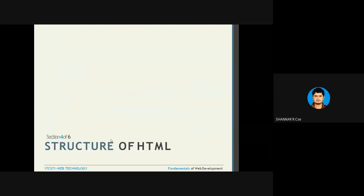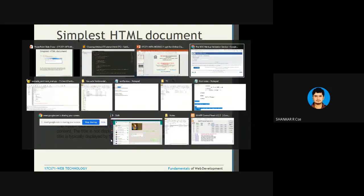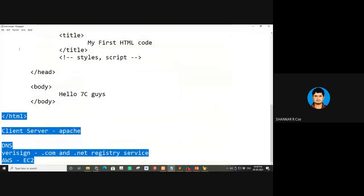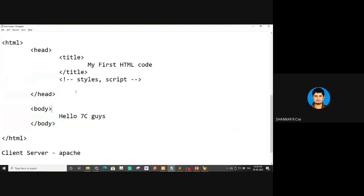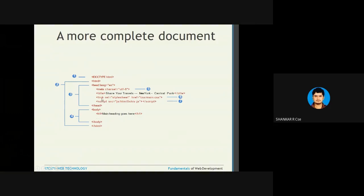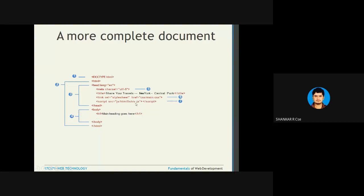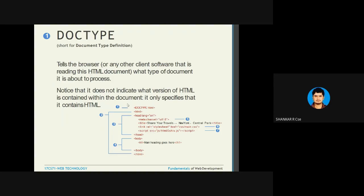Structure of HTML: in the head part you write styles and scripts, apart from title. Link rel equal to stylesheet, href equal to your CSS file. Script src equal to your JavaScript location, then close the script. This is called external JavaScript. There are three ways: inline JavaScript, internal JavaScript, and external JavaScript — similar to inline style, internal style, and external style.